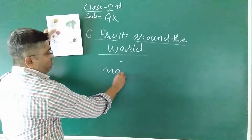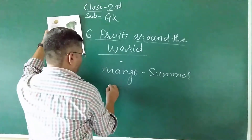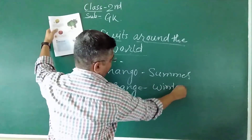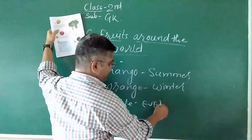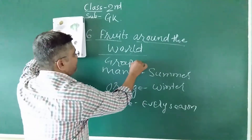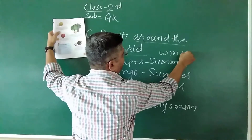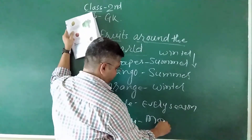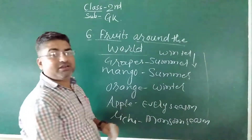Mango we enjoy in summer days. Orange we generally enjoy in the winter season. Apple is available in any season — every season. Grapes we enjoy from summer going into the rainy season, around March onwards. So these are fruits we enjoy in different seasons.